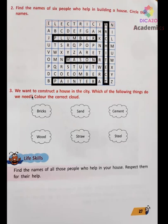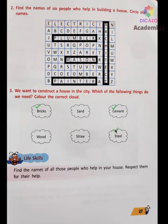We want to construct a house in the city — which of the following things do we need? Color the correct cloud. If you want to create a house in the city, you need bricks, you need cement, you need steel, and you may need wood. So these are the things that are used in building a permanent house in the city.